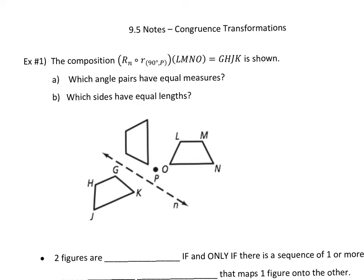9-5, we are doing congruence transformations. So congruence, meaning congruent figures and transformations: rotations, reflections, glide reflections, translations. Did I name them all? So we're taking that, kind of putting pieces together.